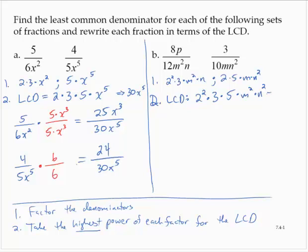The LCD is 60m squared n squared. Rewriting each of the fractions in terms of the LCD: 8p over 12m squared n — I would have to multiply that by something to get a denominator of 60m squared n squared.